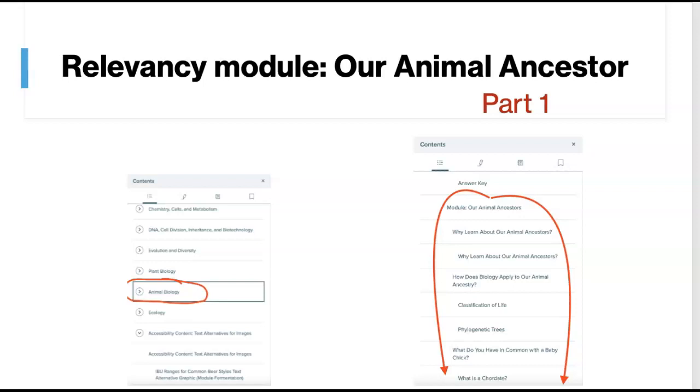That's what I want us to think about with this module about animal ancestors. All right. So to find the module, go into the relevancy modules, scroll down to the drop down arrow that says animal biology.